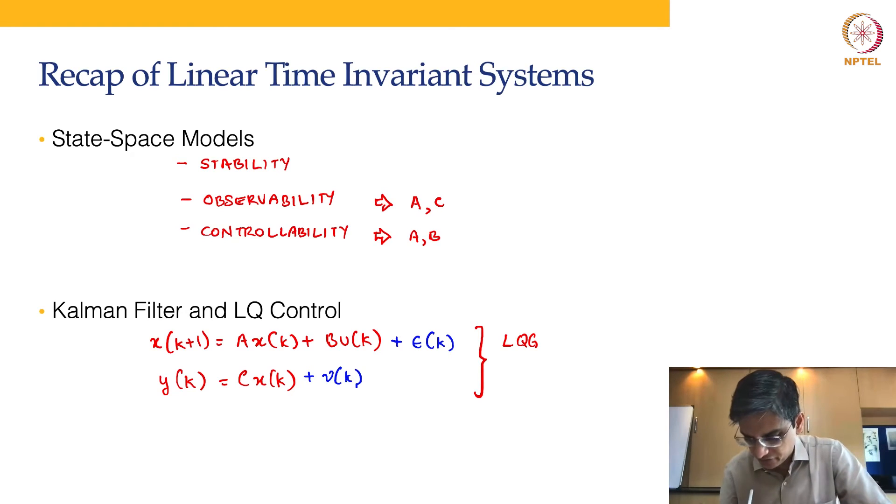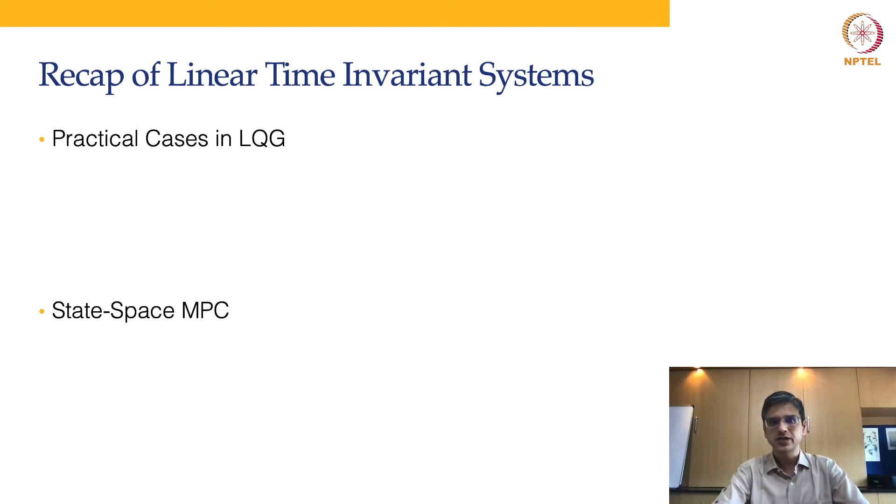LQG for linear systems with additive Gaussian noises follows the separation principle, which basically means that independently you can develop LQR, independently you can develop Kalman filter, and together LQR plus Kalman filter becomes a closed-loop optimal controller. That's what we talked about in weeks eight and nine.